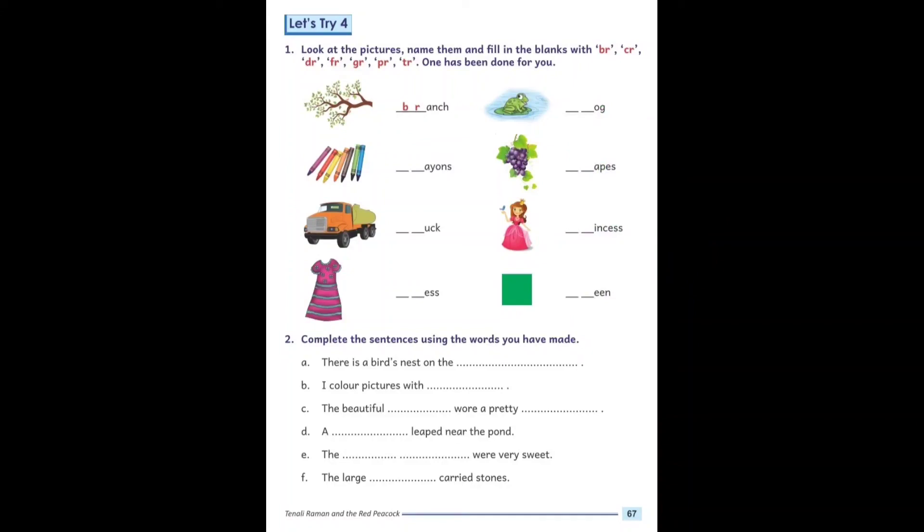Next: the beautiful dash princess wore a pretty dash. Here we write princess. Next sentence: A dash lived near the pond. Here we write frog, F-R-O-G.